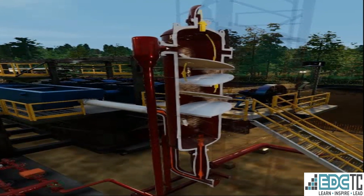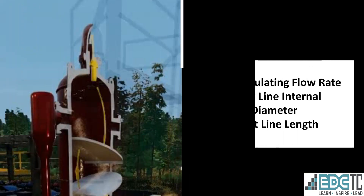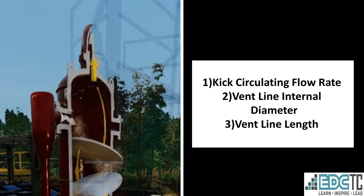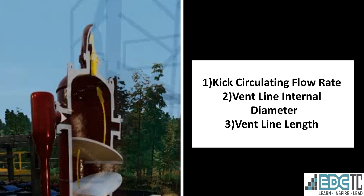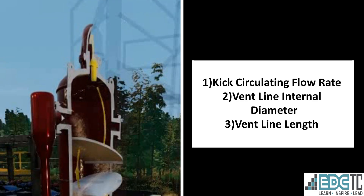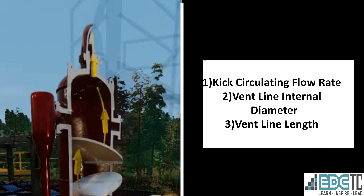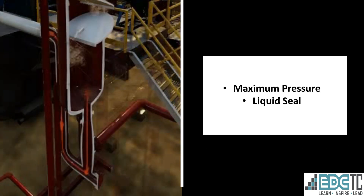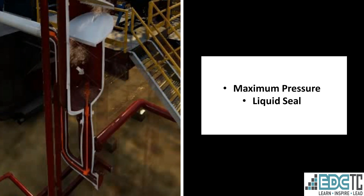Two opposing forces act inside the mud gas separator. One force is the gas buildup or back pressure, which is controlled by the kick circulating flow rate — known as slow pump rate or RRCP — as well as by the vent line ID and the vent line length.